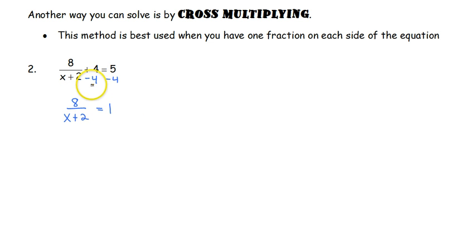You could start with more than one term, but you have to put it into the correct format first. That's why, if you have more than one term, go with the LCD method. If you have just one term on each side, go with cross-multiplying. Again, you can use either method.